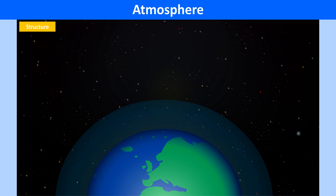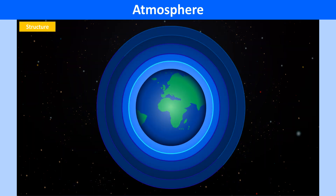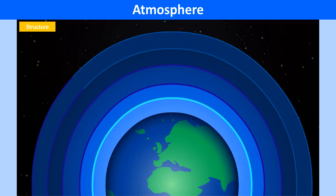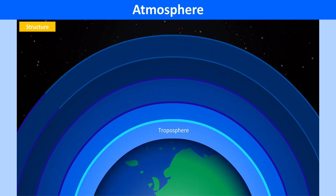The atmosphere extends up to a height of about 1,600 kilometers. The atmosphere can be divided into five layers. There is a thin buffer zone between each two layers. The troposphere is the lowest layer with clouds and all weather occurrences such as storms. Here, the temperature decreases with height.